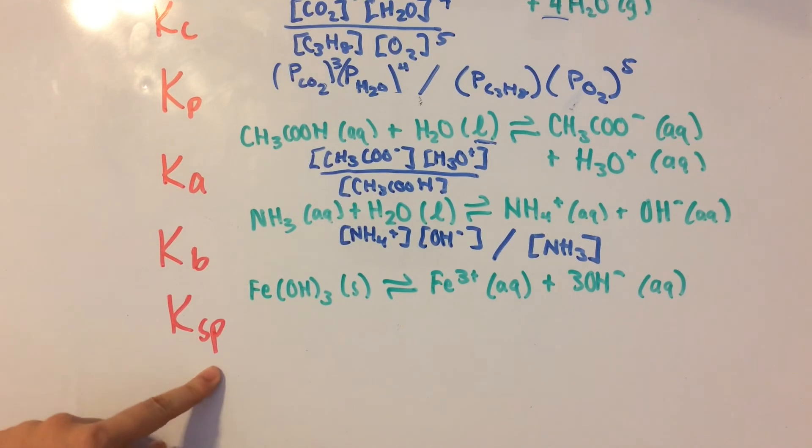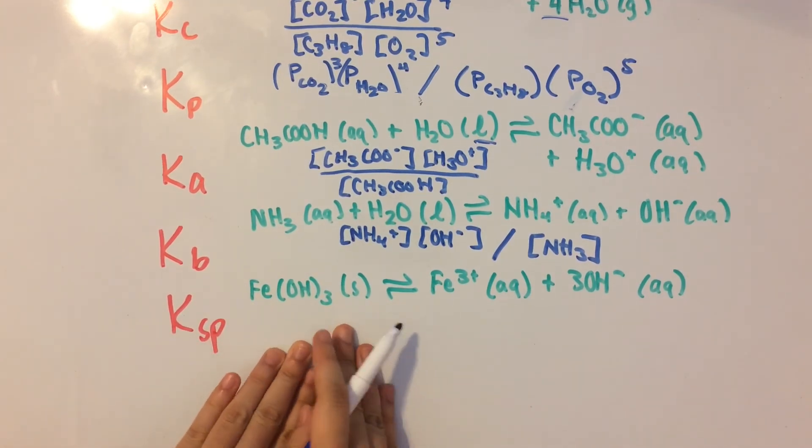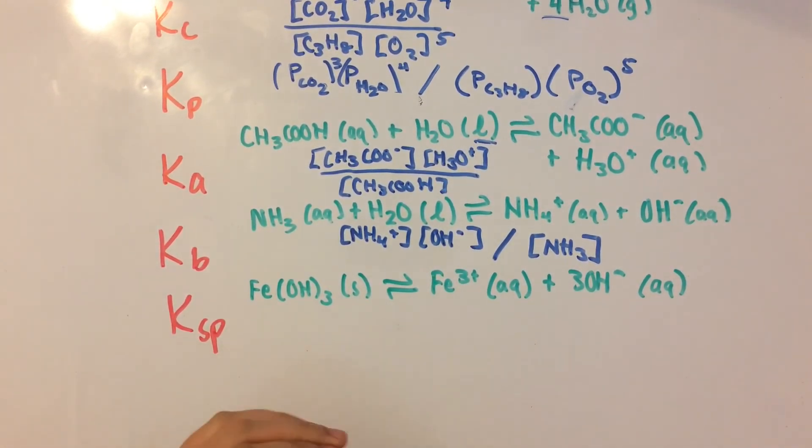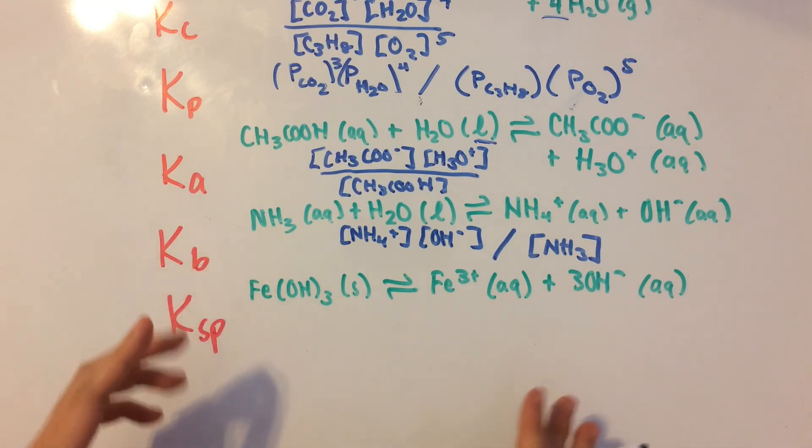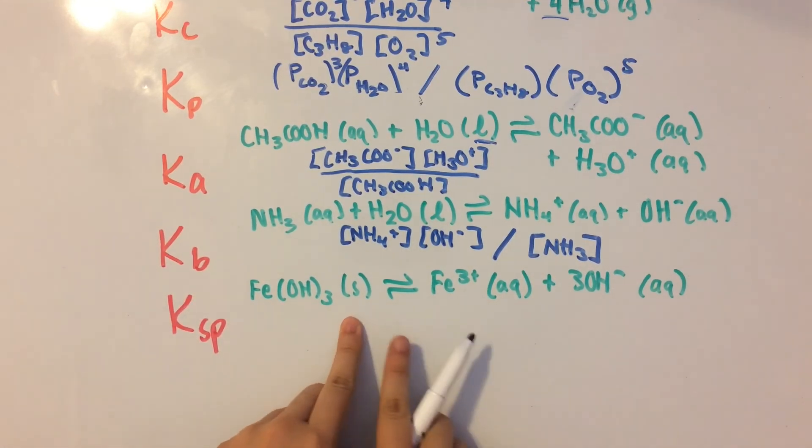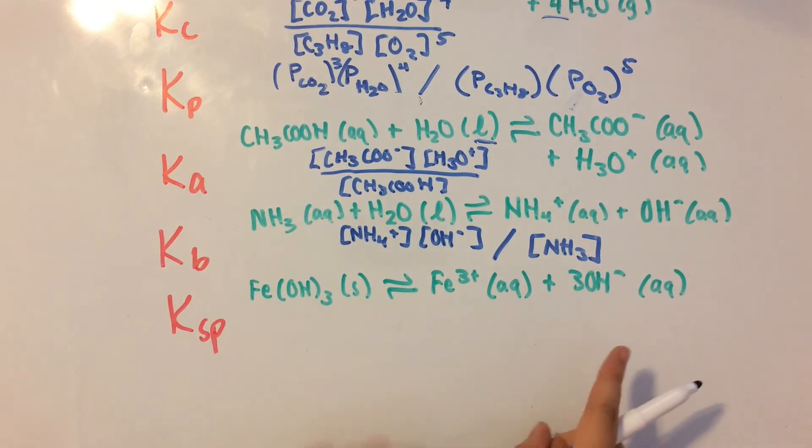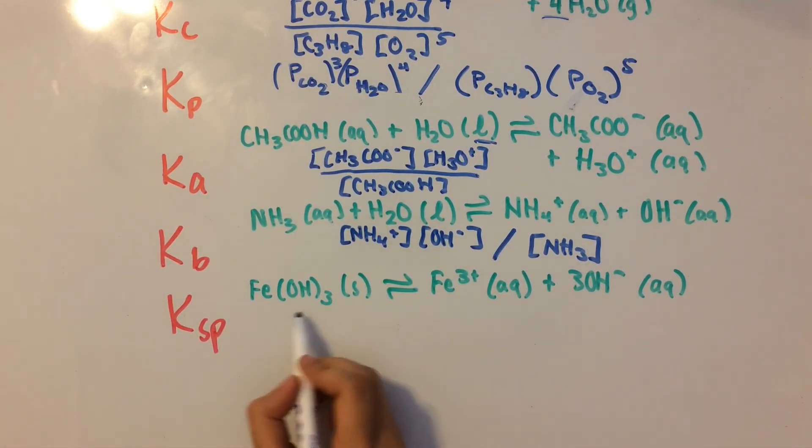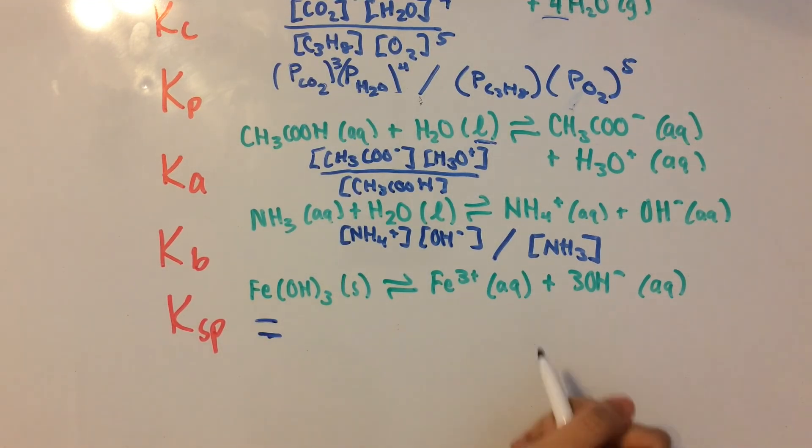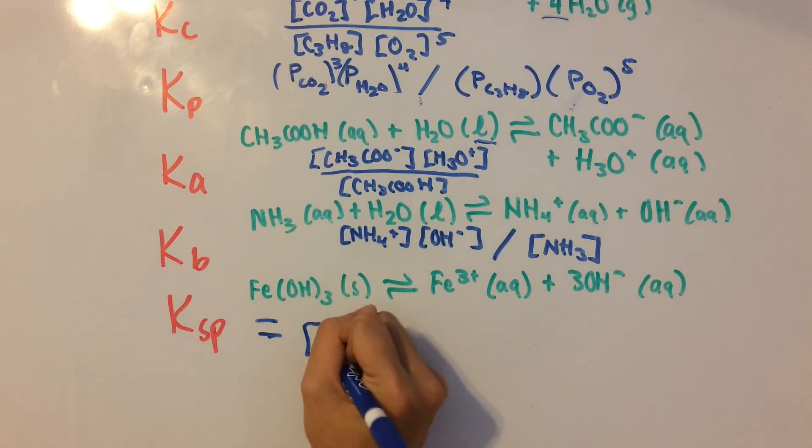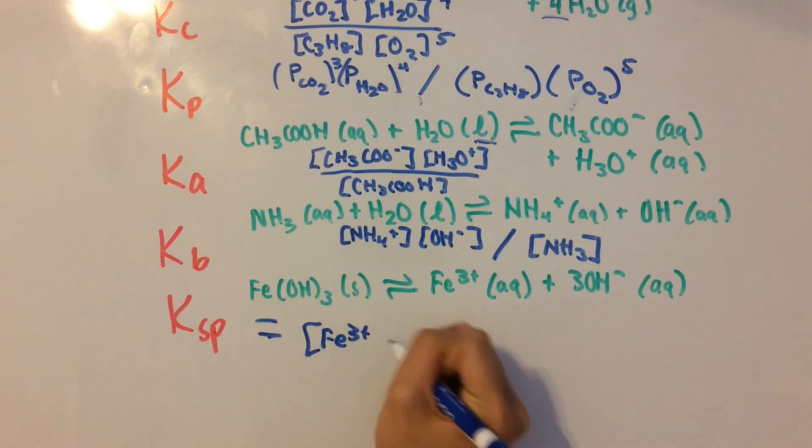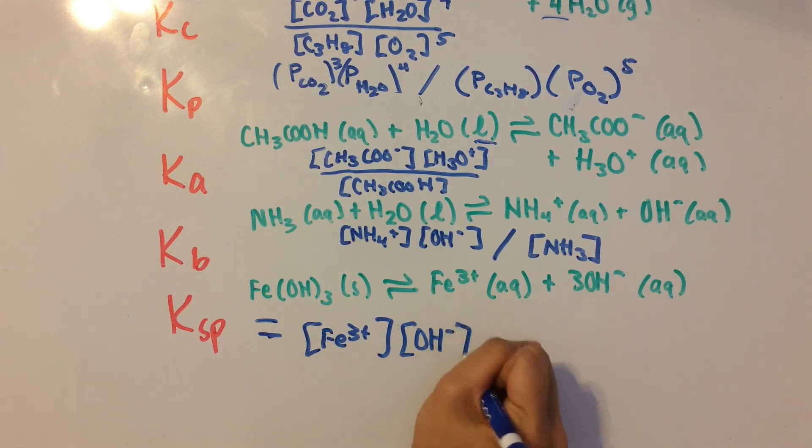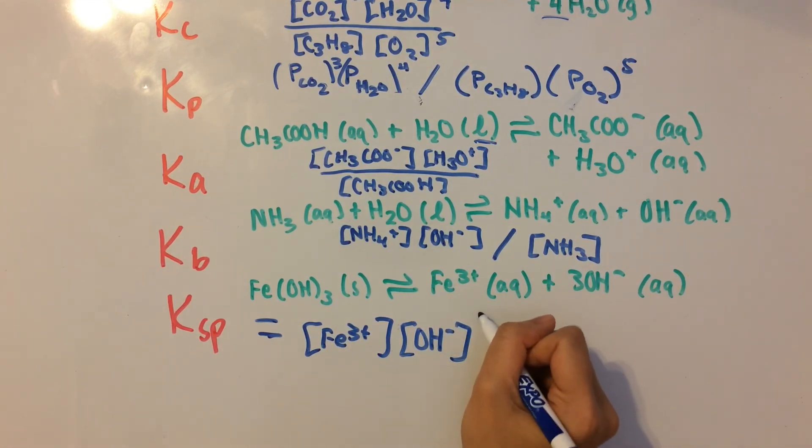Now the last one, solubility product. That's when you have a solid, and some of it is basically dissolving in a solution. So Fe(OH)3 solid is going to dissolve into Fe3+ ions and OH- ions. We're not going to have the solid in the expression, so we're just going to set Ksp equal to Fe3+ times OH- to the third power.